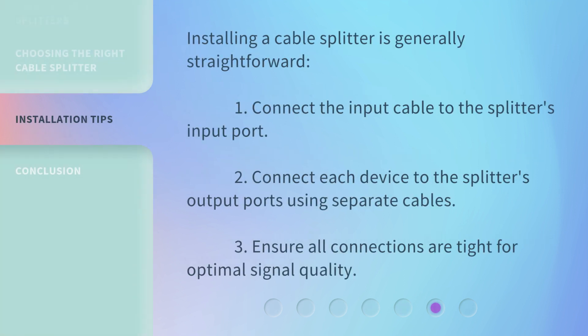Installing a cable splitter is generally straightforward. First, connect the input cable to the splitter's input port. Second, connect each device to the splitter's output ports using separate cables. Third, ensure all connections are tight for optimal signal quality.